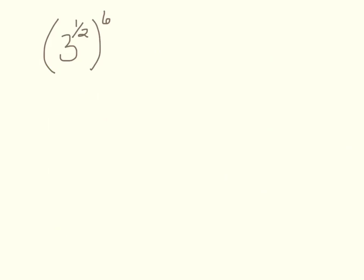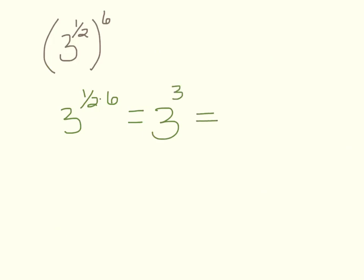Next: 3 to the 1/2 power in parentheses, all raised to the sixth. This is a power to a power, so we multiply: 3 to the 1/2 times 6. Half of 6 is 3, so we get 3 to the third, which equals 27.